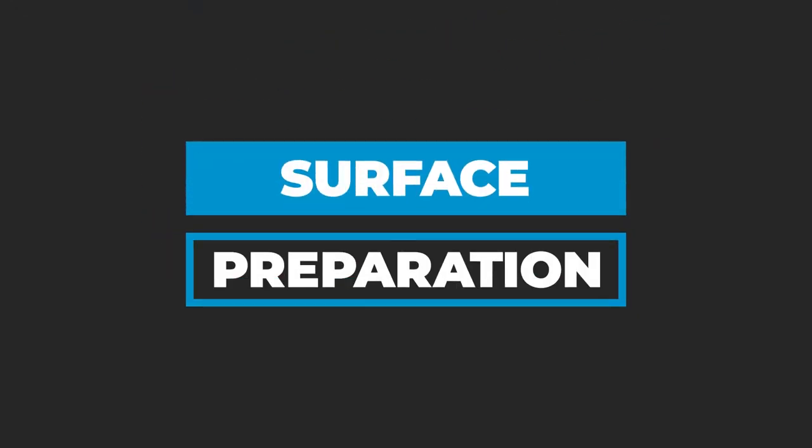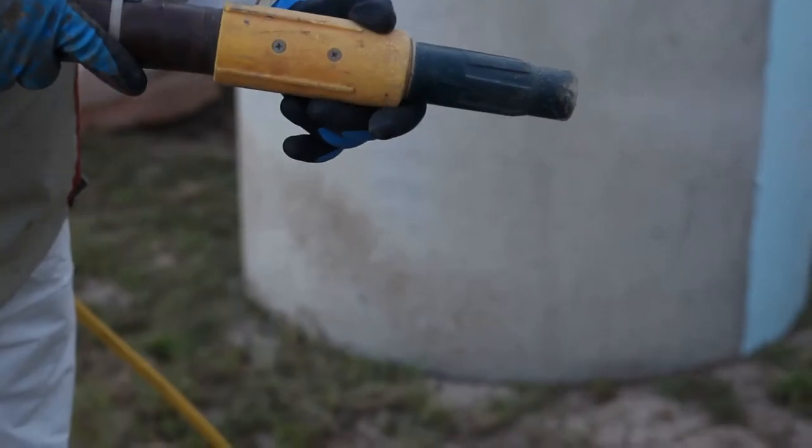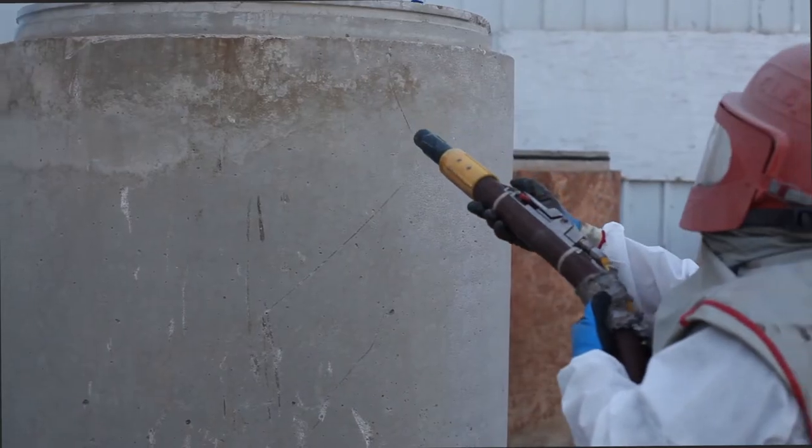Proper surface preparation of the substrate is the first step in a successful manhole rehabilitation. Use of high pressure water or abrasives remove damaged and corroded concrete, dirt, and contaminants from the substrate.